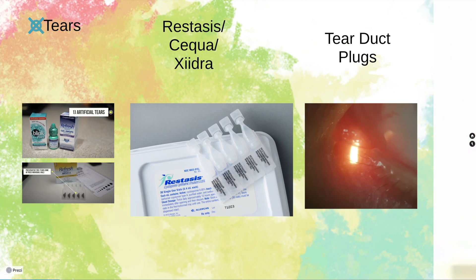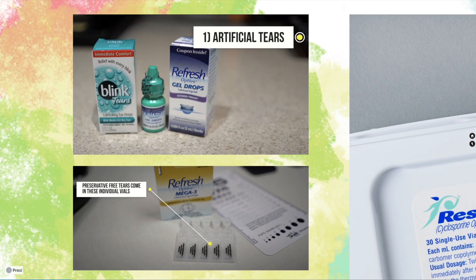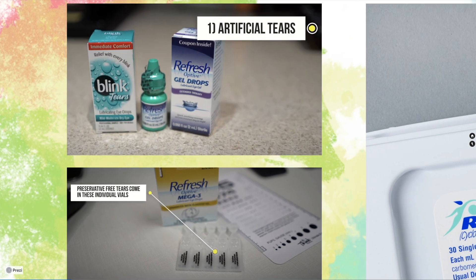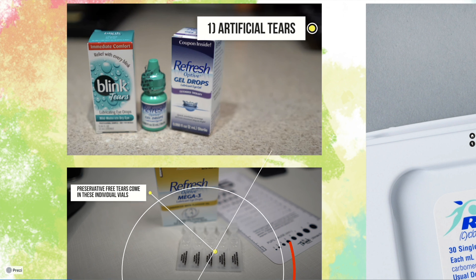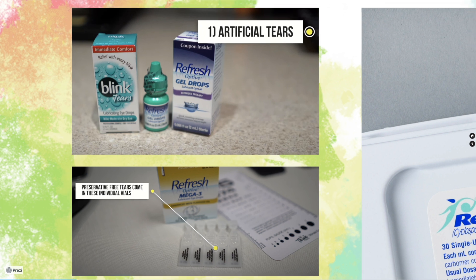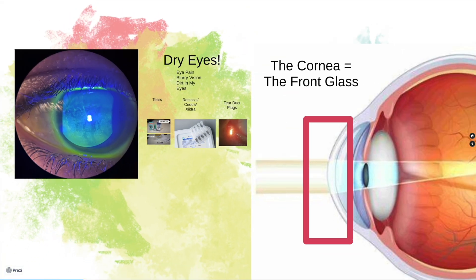The treatment for dry eyes involves artificial tears, prescription medications such as Restasis, Xiidra, or Cequa, or even punctal plugs where we stop tears from leaving your eyes. By far, my favorite treatment is artificial tears. I typically prefer preservative-free artificial tears, which come in individual vials. That's a quick course on dry eyes.